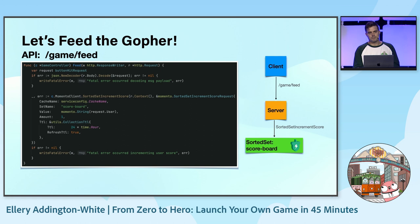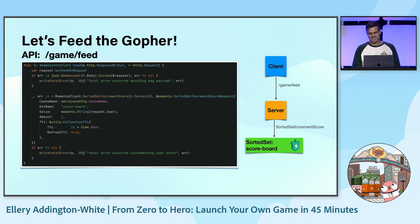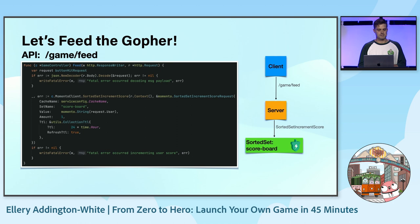The first API we're going to implement is our manual feed API. Pretty simple — we have a request come in, we decode the request and grab the username. This is a very simple game with no auth, so we're just trusting everyone who types in their username. Then we call sorted set increment score: we have a sorted set named 'scoreboard' representing all our players, and for each request we increment that user's value in the sorted set by one.